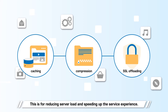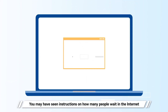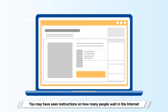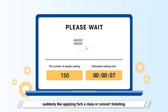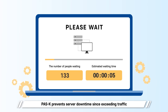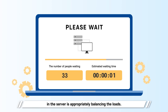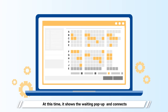This reduces server load and speeds up the service experience. You may have seen instructions on how many people are waiting and how long you have to wait when there is massive traffic suddenly, like applying for a class or concert ticketing. PASK prevents server downtime since exceeding traffic is appropriately load-balanced. It shows a waiting pop-up and connects automatically when the service is available.